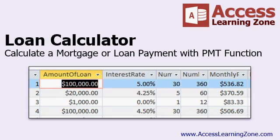The situation is you know the amount of the loan — let's say a $100,000 mortgage — you know the interest rate the bank is giving you, let's say 5%, and you know that you have a 30-year loan. You can use Access to calculate what the monthly payment should be.